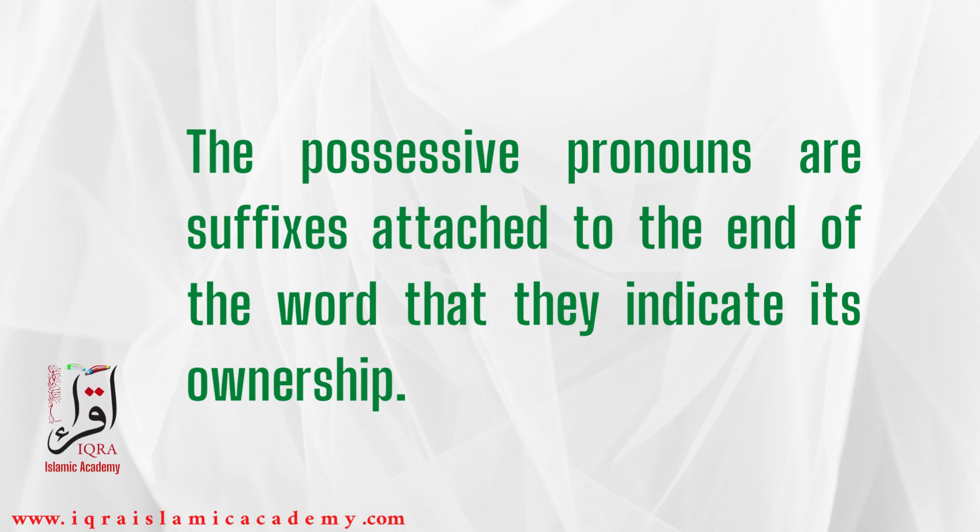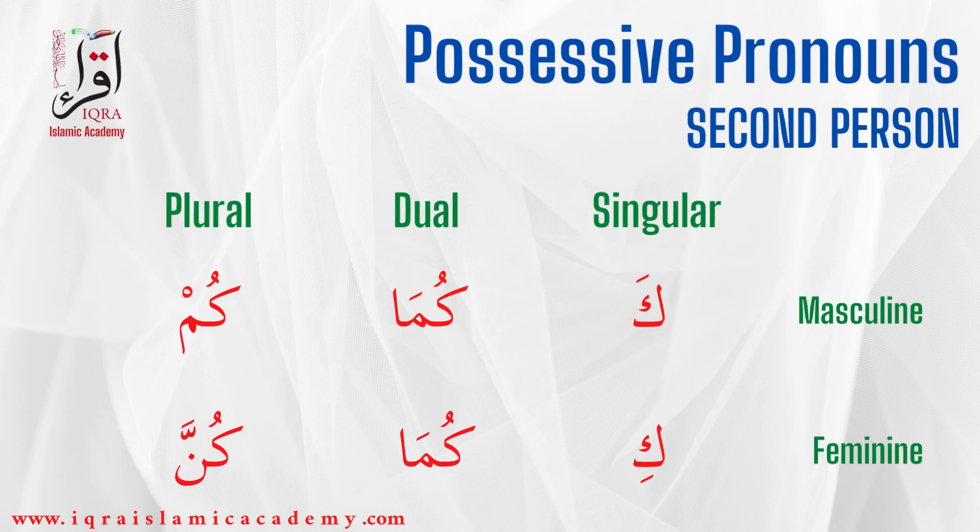Possessive pronouns are suffixes attached to the end of the word that indicate its ownership. Possessive pronouns for the second person are different for masculine and feminine.